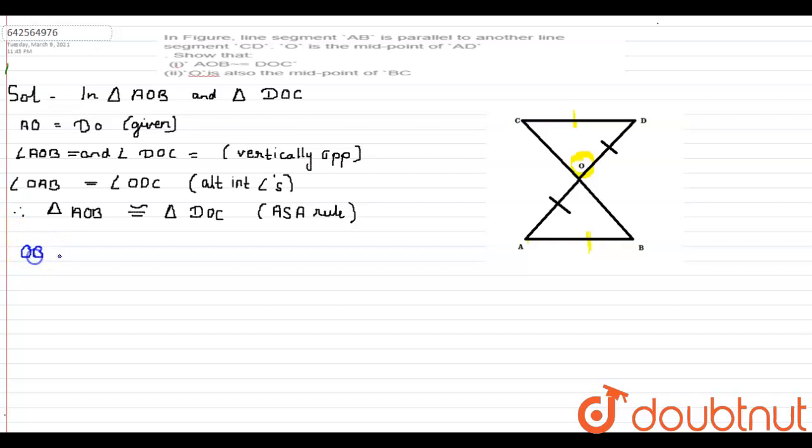For that we can say that OB is equal to OC, and the reason will be CPCT, which means corresponding parts of congruent triangles are equal.